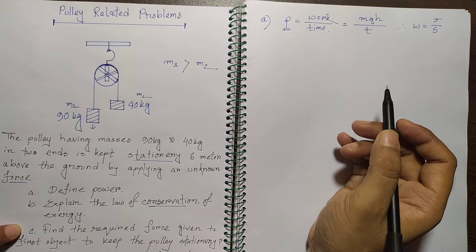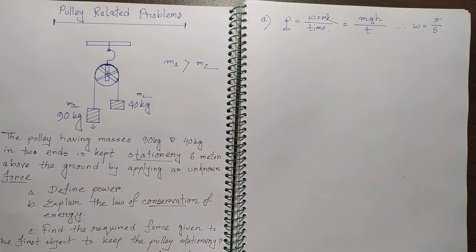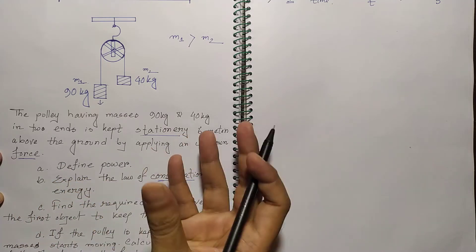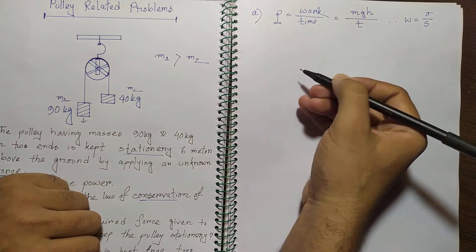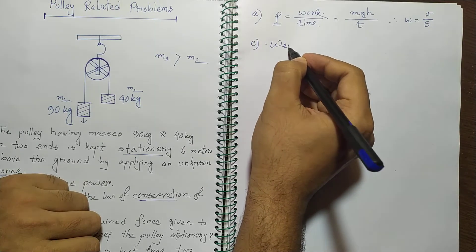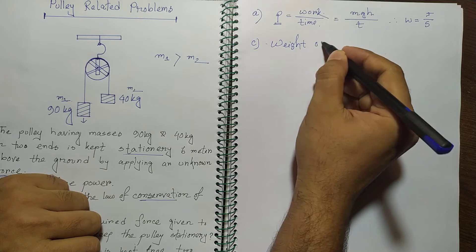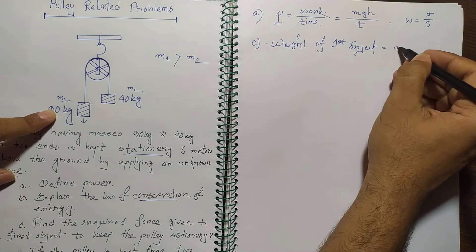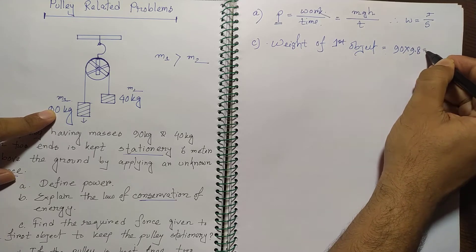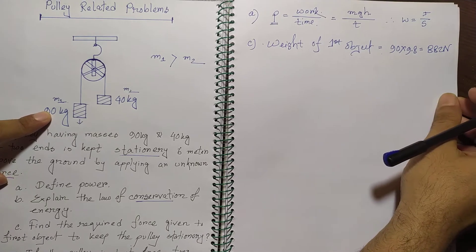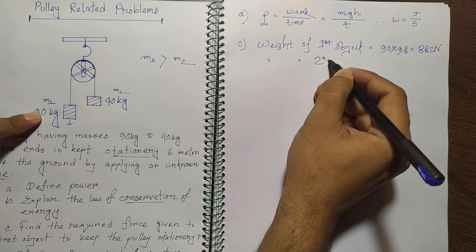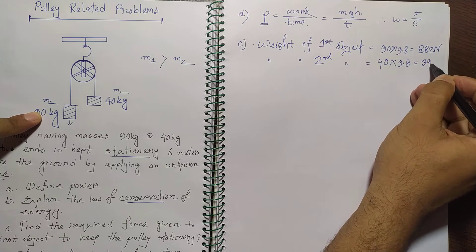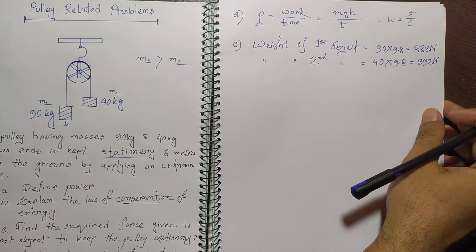Question C asks to find the required force applied to the first object to keep the pulley stationary. The weight of the first object is W = mg = 90 × 9.8, which equals 882 newtons. The weight of the second object is 40 × 9.8, which equals 392 newtons.